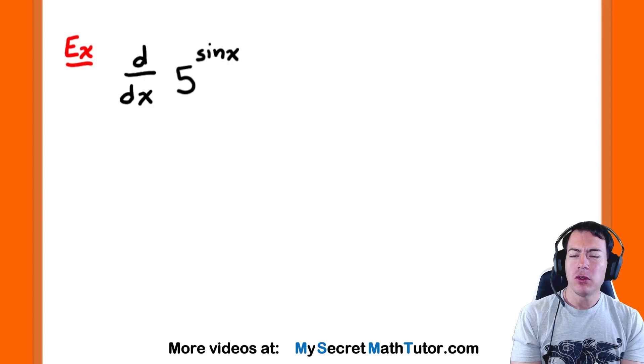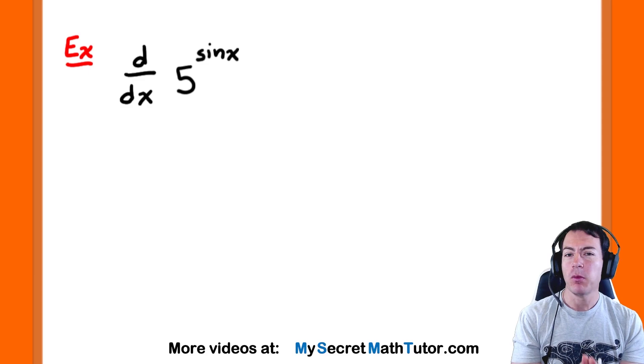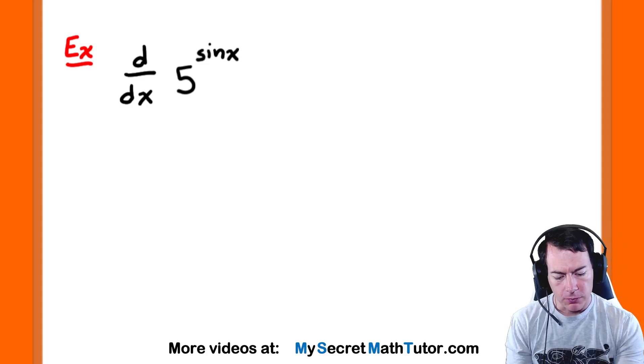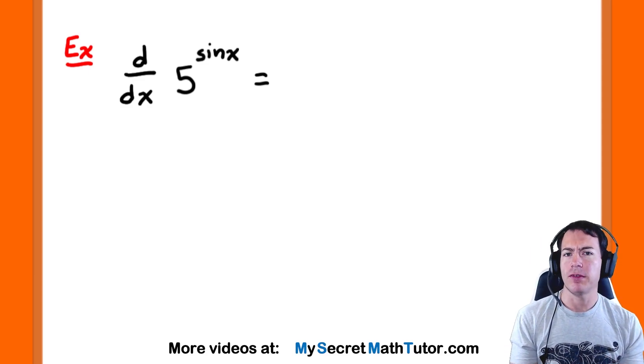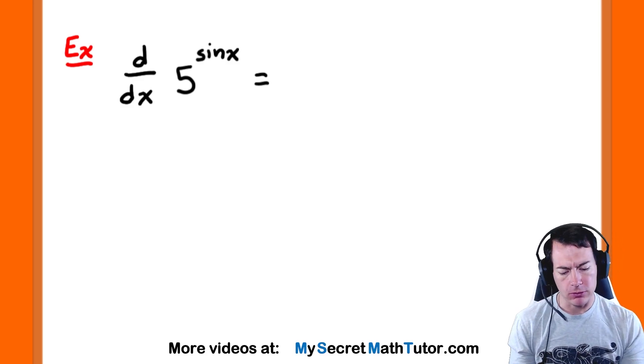So look how we can do an example like something like 5 raised to the power of sine of x. Okay, so we're going to take this derivative and we're going to use the chain rule on it. The first thing I need to do is really take the derivative of the outside function. And in taking the derivative of the outside, that's where I'm taking the derivative of that exponential function.